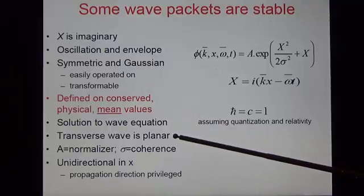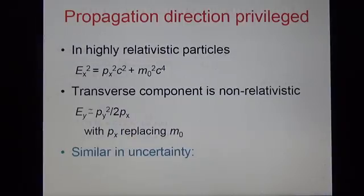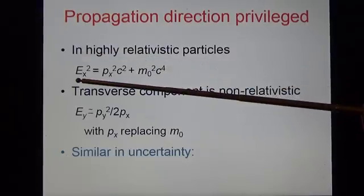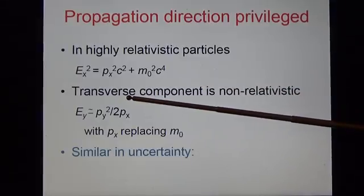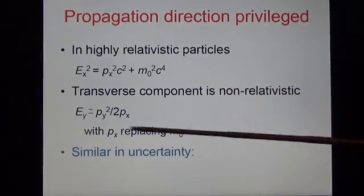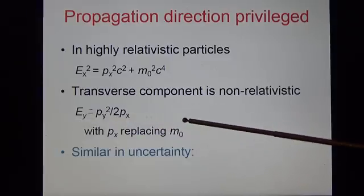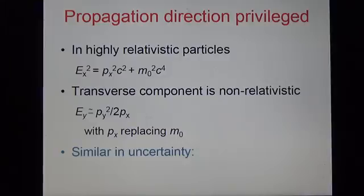The transverse wave is planar. But notice that in physics generally, the propagation direction is privileged. For example, in highly relativistic particles, the energy is given by Einstein's formula. But the transverse component is non-relativistic. E is equal to p squared over 2m, with px replacing the rest mass. Something similar happens in uncertainty as we shall see.